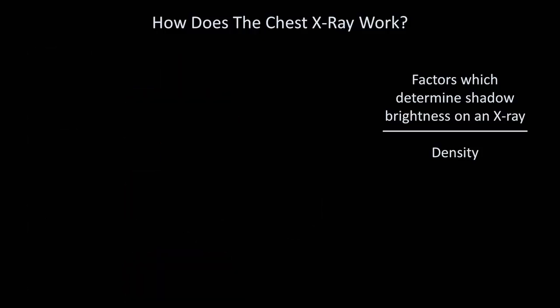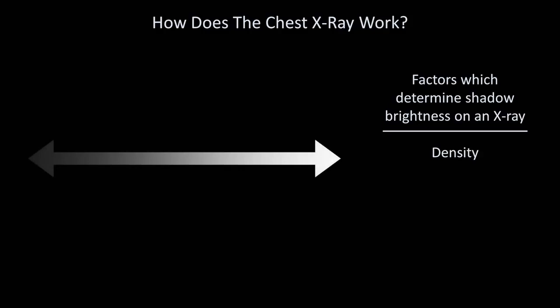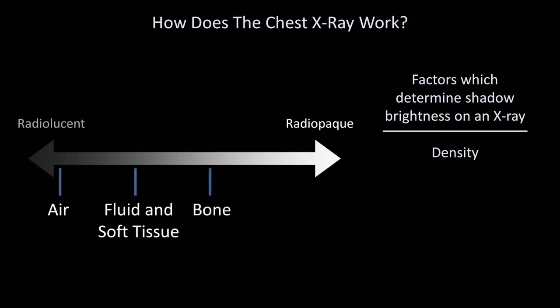In summary, there is a spectrum of radio densities into which different materials fall. Those that allow most x-rays through are called radiolucent and appear black or near black on x-ray. Those that block most x-rays are called radio opaque and appear white. For medical x-rays, there are essentially four classes of material. Air, which is the most radiolucent. Next is fluid and soft tissue. Then bone. And finally metal.